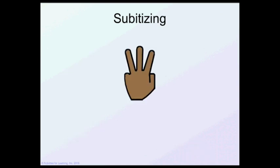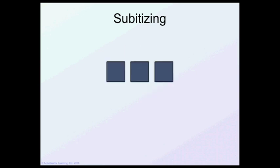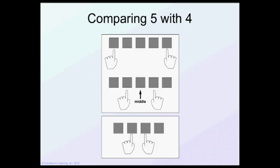Subitizing allows the child to grasp the whole and the elements at the same time. Subitizing seems to be a necessary skill for understanding what the counting process means. Here's three. Here's also three with tally sticks or popsicle sticks. Here's also three. Four. And when we get to five, you can compare five with four because five has a middle and four does not.